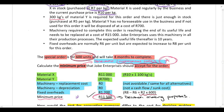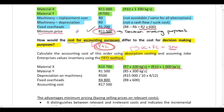For Material Y, all 300 kilograms are already in stock and were purchased at 5 Rand per kilogram, so for normal accounting costing purposes the material has a cost of 1,500 Rand.